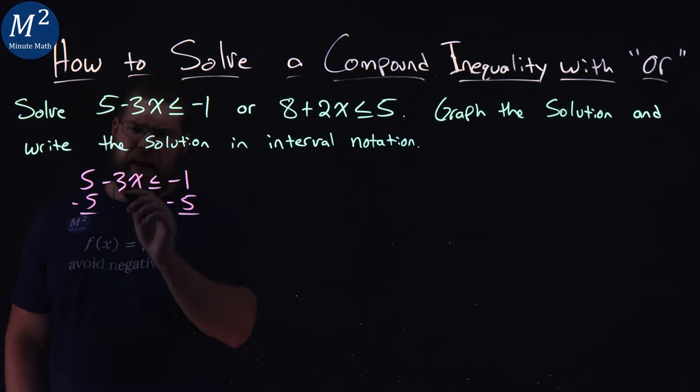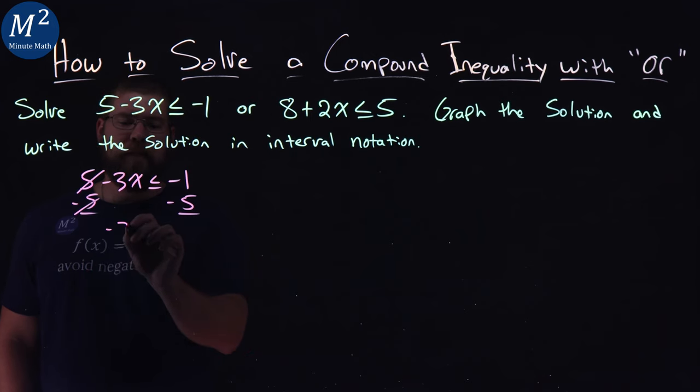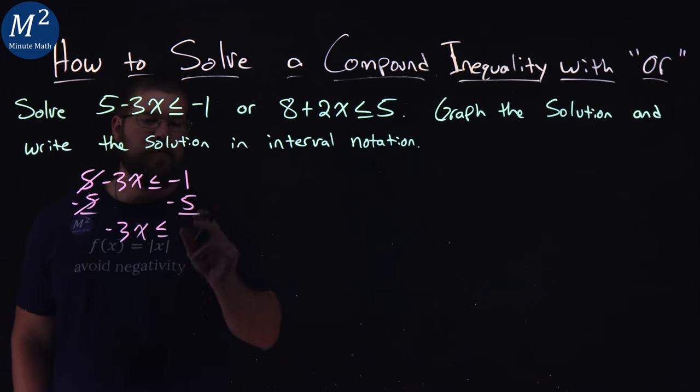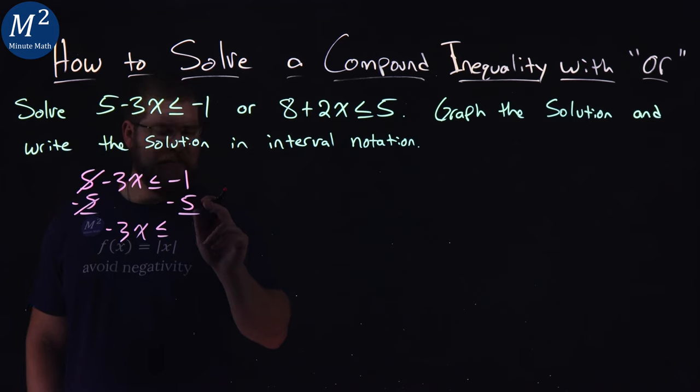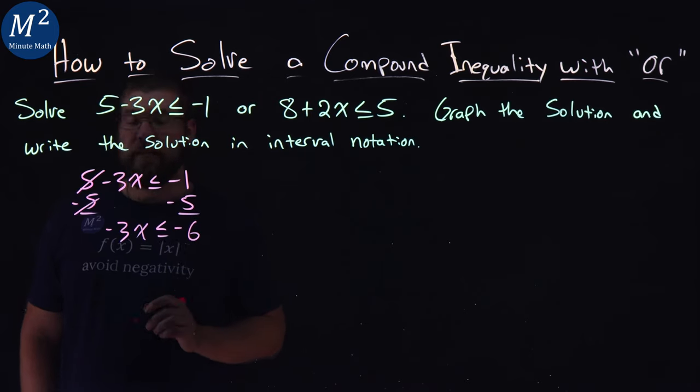The 5s cancel on the left. I have negative 3x is less than or equal to negative 1 minus 5 is negative 6.